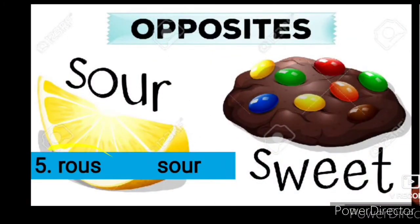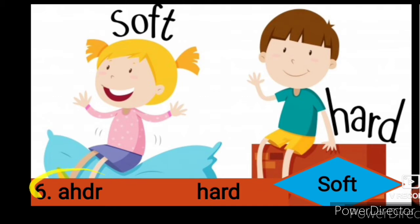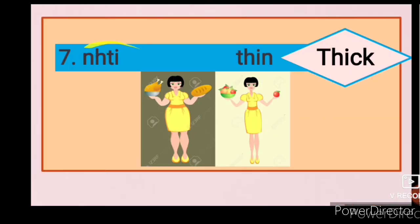Next is R-O-U-S. When we rearrange it we will get S-O-U-R: sour. And the opposite of sour is sweet, S-W-E-E-T. Next is A-H-D-R. After rearranging we will get H-A-R-D: hard. And the opposite of hard is soft, S-O-F-T. Next is N-H-T-I. After rearranging we will get thin, T-H-I-N. And the opposite of thin is thick, T-H-I-C-K.